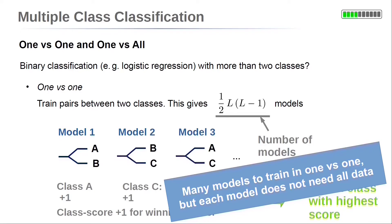So for a large number of classes, you should prefer one versus all. And for a large number of data points, you should prefer one versus one.